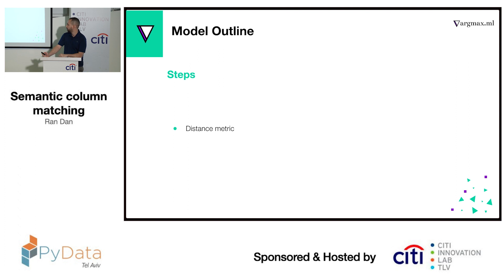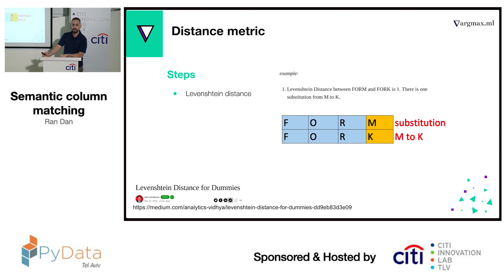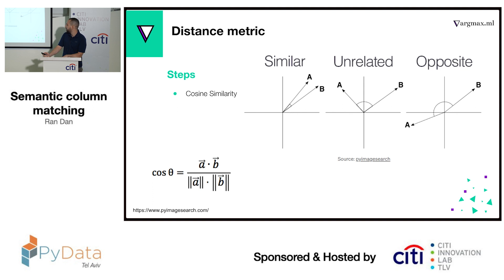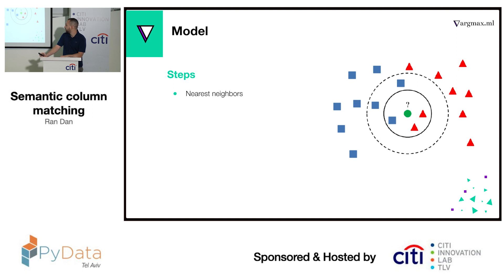In terms of distance metric, why not use Levenshtein distance? Basically, Levenshtein distance doesn't capture semantic relations — the difference between 'kitten' and 'cat' is 5, while 'kitten' and 'sitting' is only 3, so the semantic relationship isn't preserved. So we used cosine similarity to measure the distance between the embedded vectors in the latent space. Then we used nearest neighbors — some would say that's not the fastest algorithm, but it worked well for us, and we can always accelerate it using GPUs with Rapids.